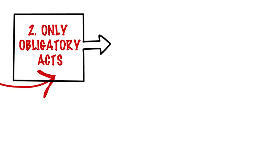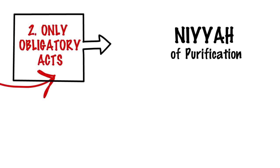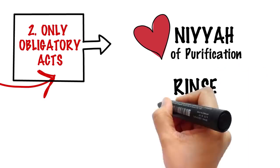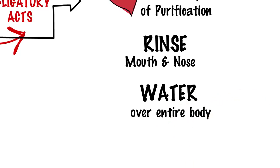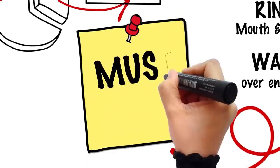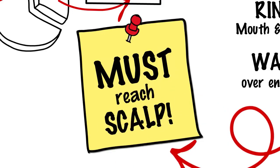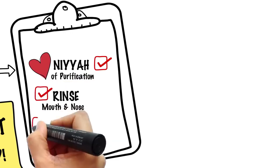So what are these obligatory acts of ghusl? A beforehand niya, intention that you are taking this bath to purify yourself from the major ritual impurity. Rinsing your mouth and nose and letting water run over your entire body at least once. Make sure it reaches every part of it, even your scalp under the thick hair. If you manage to do this much, then you have purified yourself from the major ritual impurity.